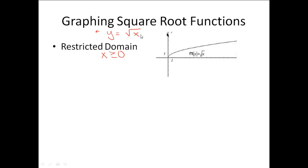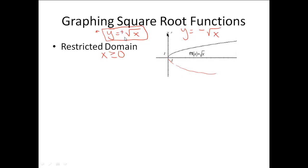The other thing to realize is it's assumed that when you're given an equation y equals the square root of x, we only want the positive portion. If they want you to graph the bottom half, they will tell you to graph y equals the opposite of the square root of x. So if there is no sign in front of the square root, it's assumed we're only dealing with the positive — we don't have to worry about the plus-minus.